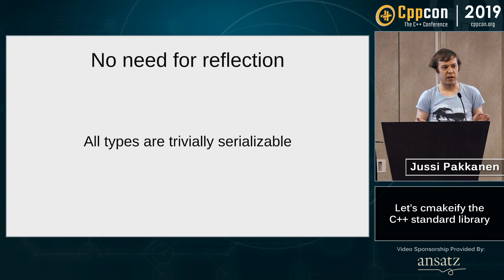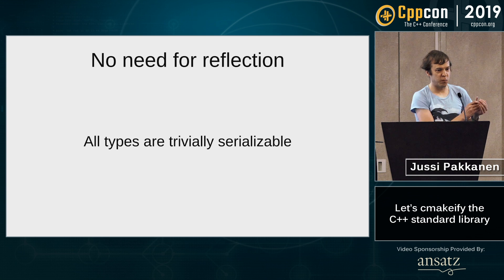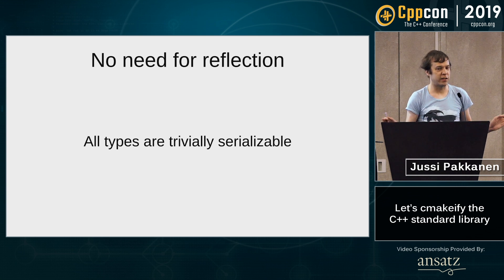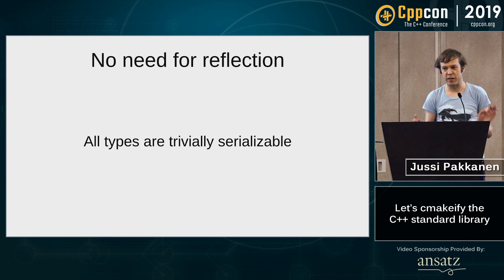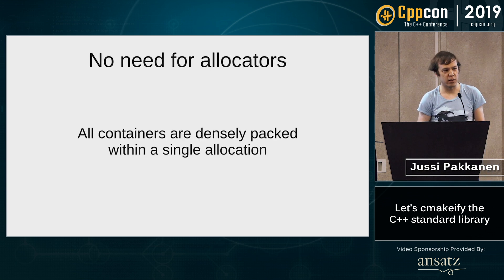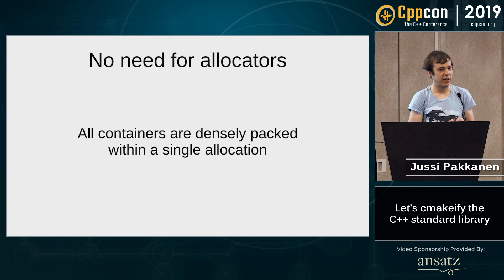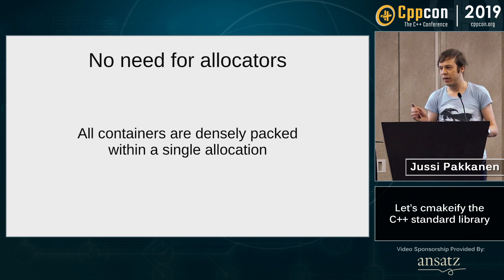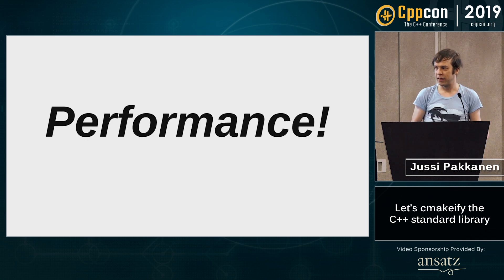You don't need reflection. Everything is serializable — you just write it out to files, write it out to sockets. You don't need to do anything. This is so awesome. For John Lakers, you don't need allocators, because everything is densely packed. Just one allocation for all, everything. No diffusion, and nothing like that.